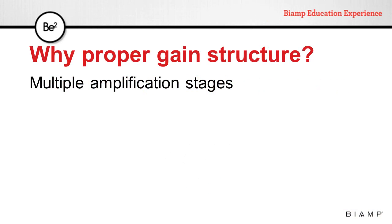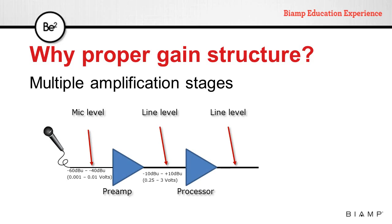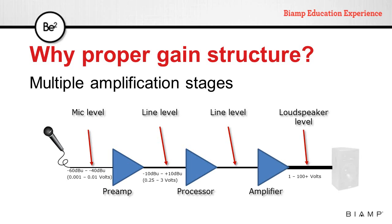When we have a sound system comprised of multiple elements, we have multiple amplification stages in the signal path. Starting from a microphone, we get a level that ranges from minus 60 dBu to minus 40 dBu — that's about 0.001 to 0.1 volts. That signal usually goes through a preamp that raises it to line level, anywhere between minus 10 dBu and plus 10 dBu, or 0.25 to 3 volts. That level should remain throughout the system until we reach the last stage — the amplifier — which raises it to speaker level: 1 to 100 volts or more.